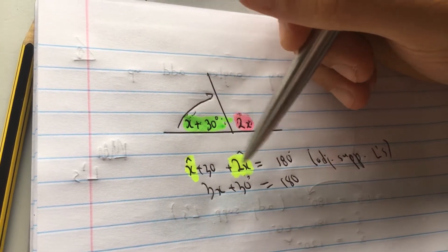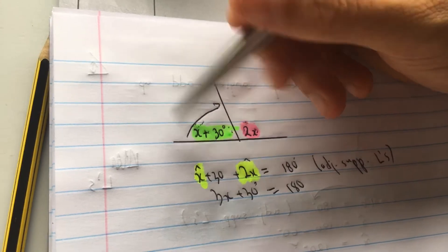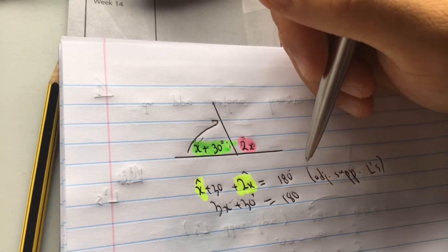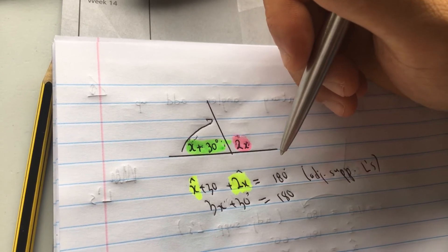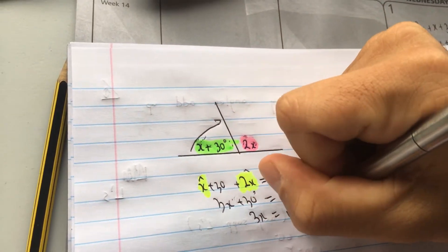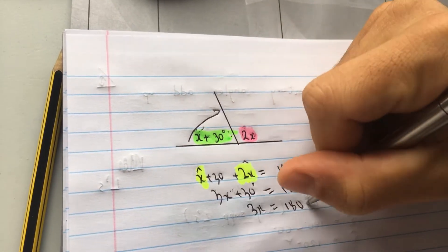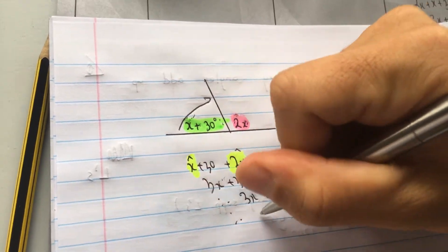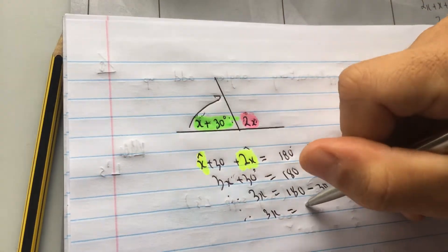x plus 2x. What's a dog plus two dogs? Three dogs. What do I do to add 30? You should know from equations. I take it over. So 3x is equal to 180. That was plus 30. So when it goes over, minus 30. Therefore, 3x is equal to what? 150.